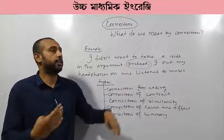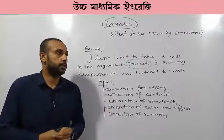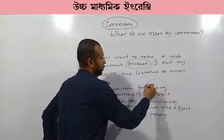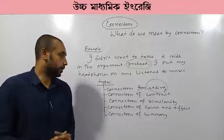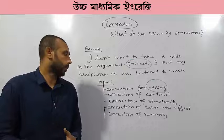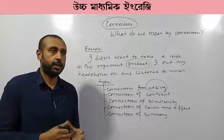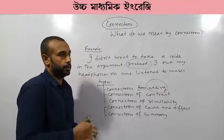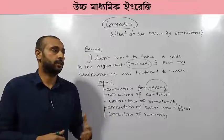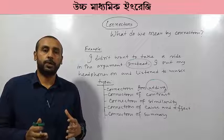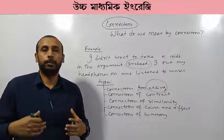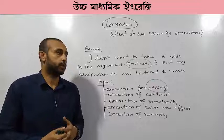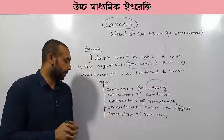There are various types of connectors. The most common types are: connectors for adding, connectors for contrast and conflict — meaning opposite ideas — connectors for similarity, meaning same characteristics or same types, connectors for cause and effect — for example, if we suffer from fever, the temperature of our body will be high, so fever is the cause and high temperature is the effect — and finally, connectors for summary or summation.